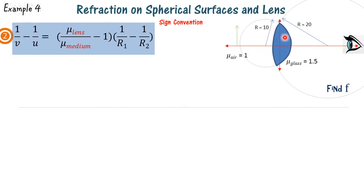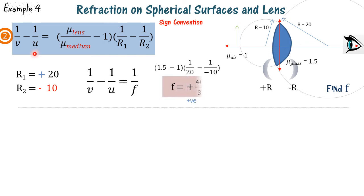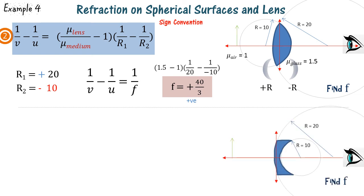Here we find the focal length of a lens with radius of curvature 20 centimeters on one side and 10 centimeters on the other, placed in air. The object is on the negative x-axis. R1, closer to the object and bulging outwards, is taken as plus 20; R2, bulging towards the eye, is minus 10. Writing the left-hand side of the lensmaker's equation as 1/f and solving, we get f equal to 40/3 positive, confirming it is a convex lens.